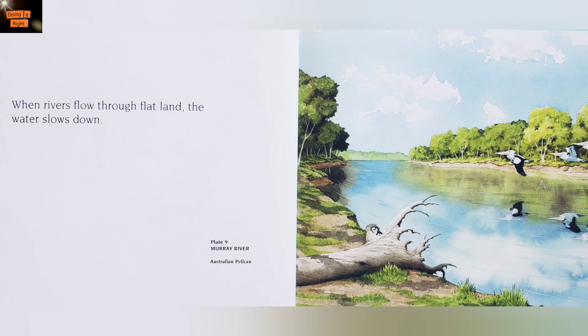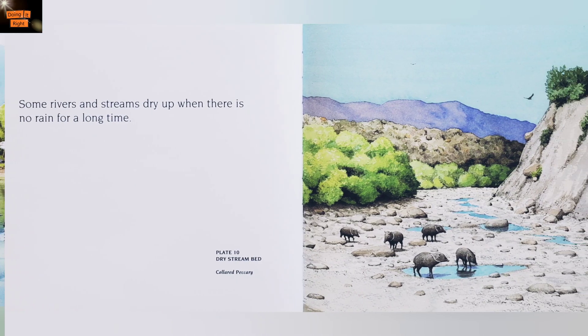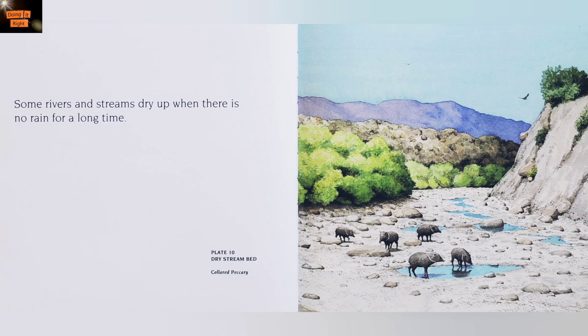When rivers flow through flat land, the water slows down. Some rivers and streams dry up when there is no rain for a long time.